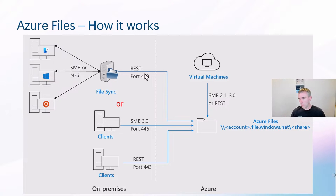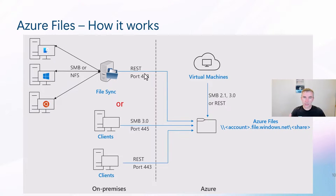If you have some trouble with this, you can also enable private link, which gives you the possibility to use your own VPN connection from your data center or local branch office to your Azure environment. Then you can encapsulate your traffic inside this VPN so the synchronization does not use the public internet.